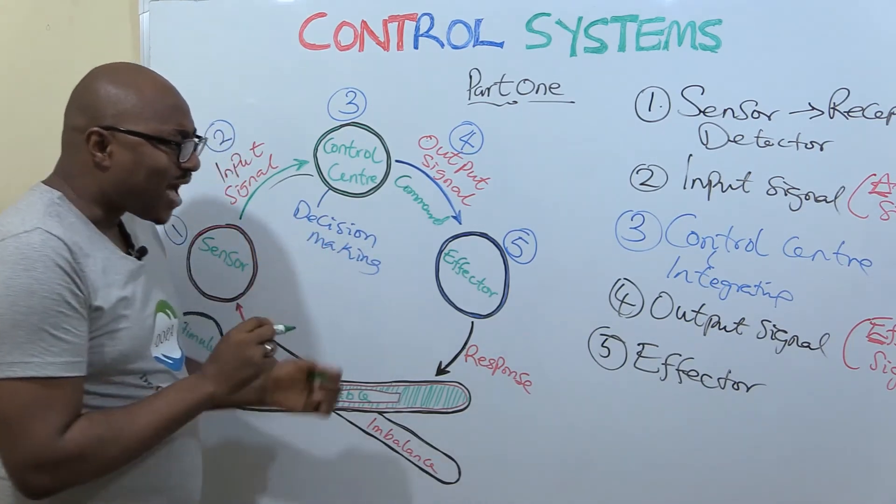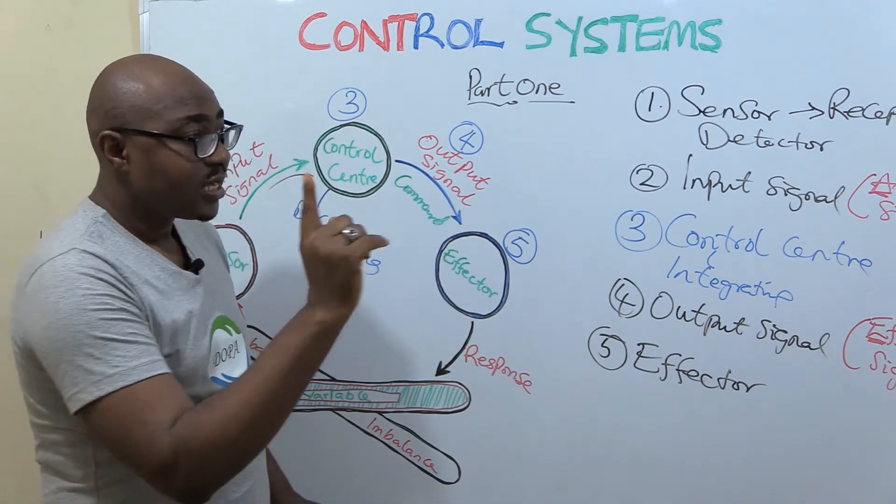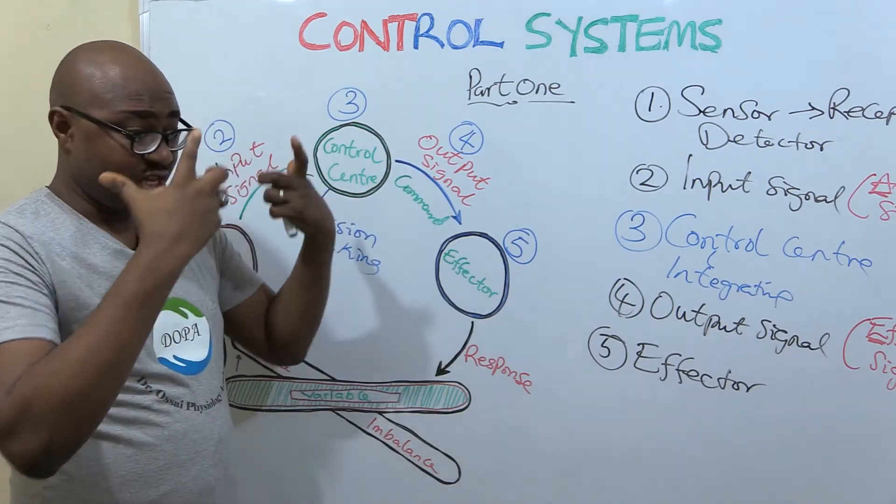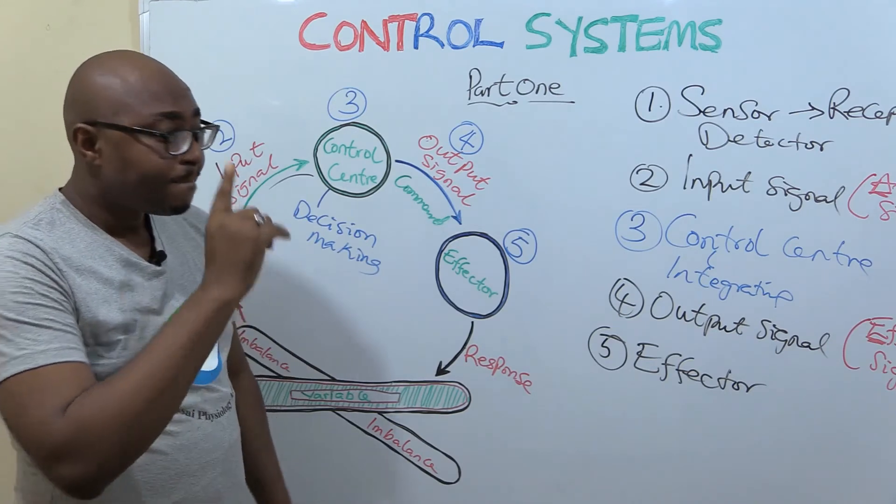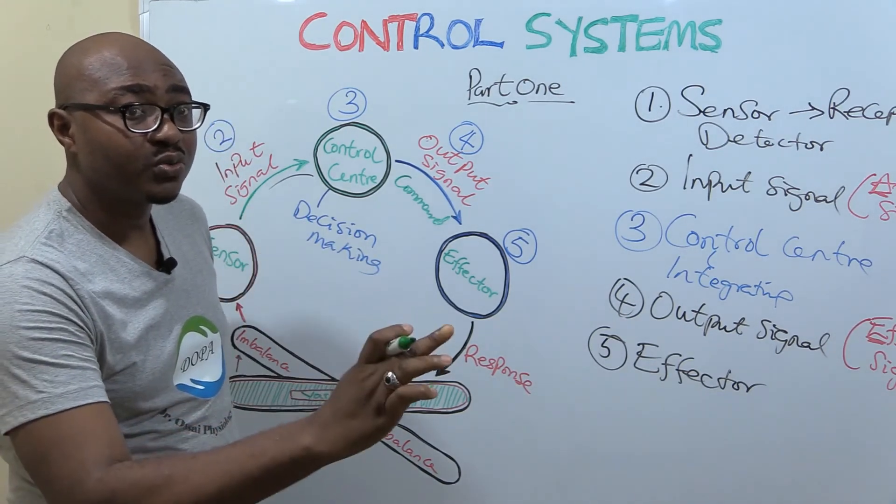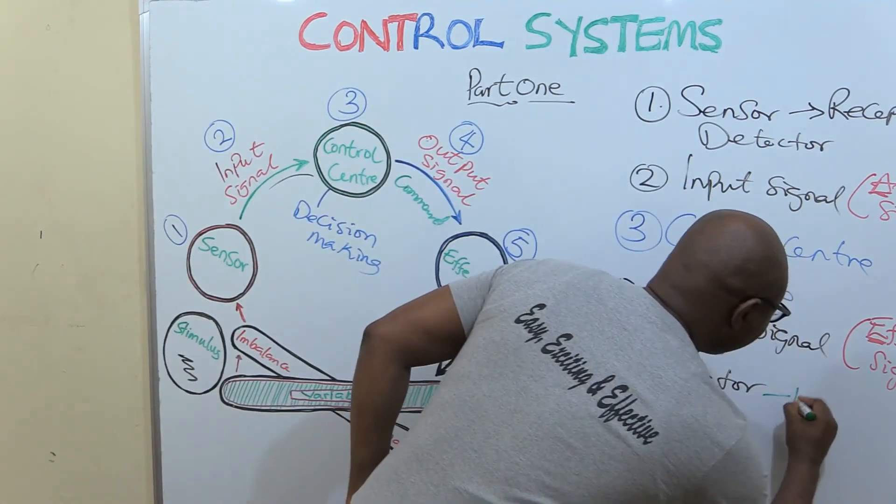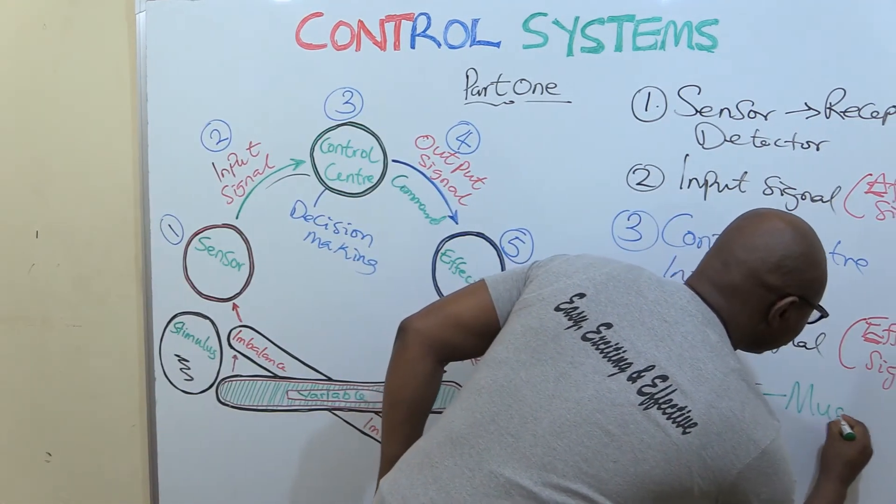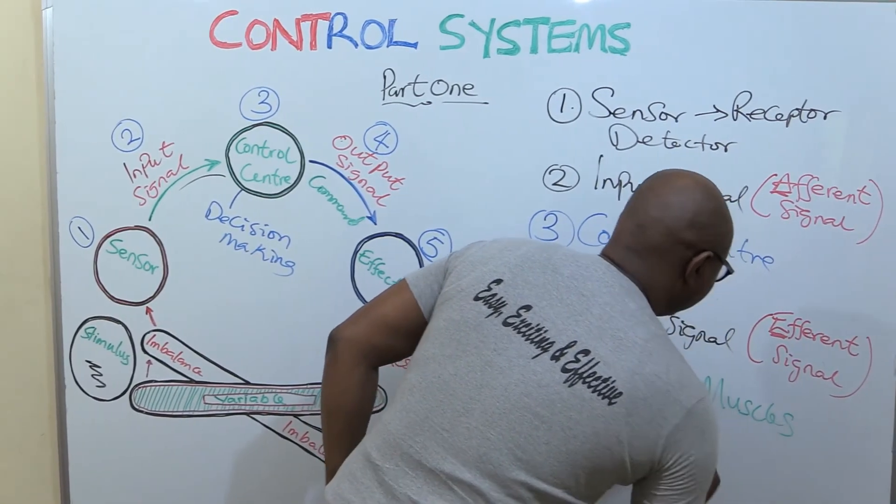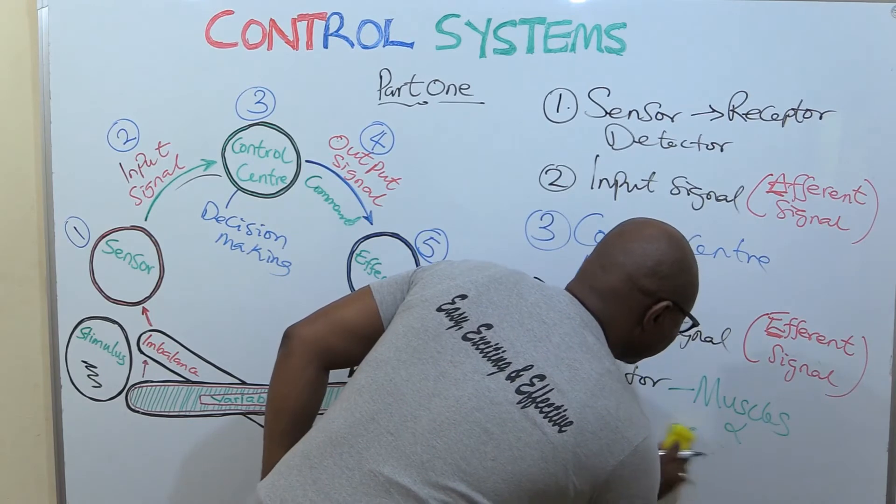So now this effector, it might look abstract to you. Most of the time in the human body, the effector - they are usually muscles and glands.